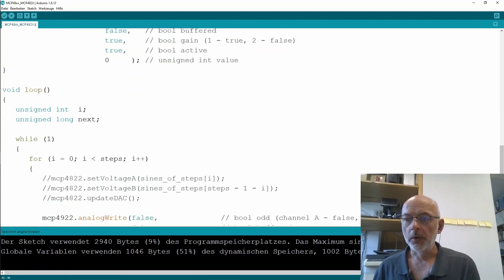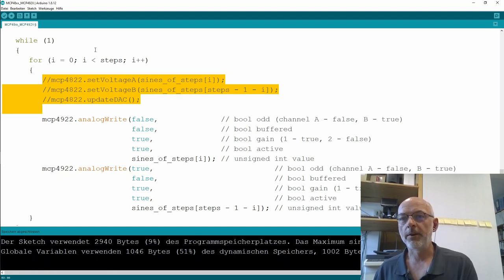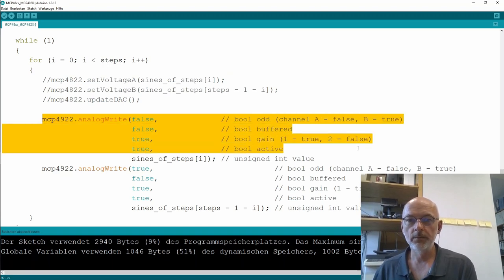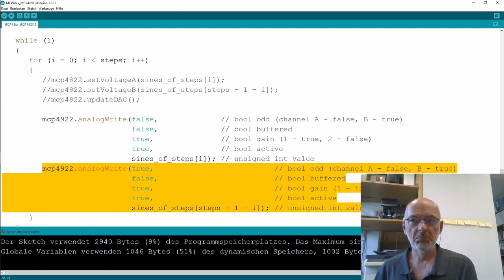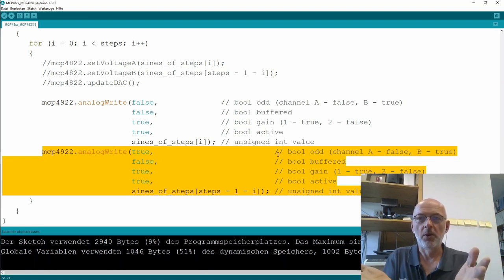So the loop, nothing new here. I just commented out the 4822 stuff and I go forever through all the steps in my sine value array and I write to both channels the sine value. And we talked about these statements before. That's it. That's all the code.